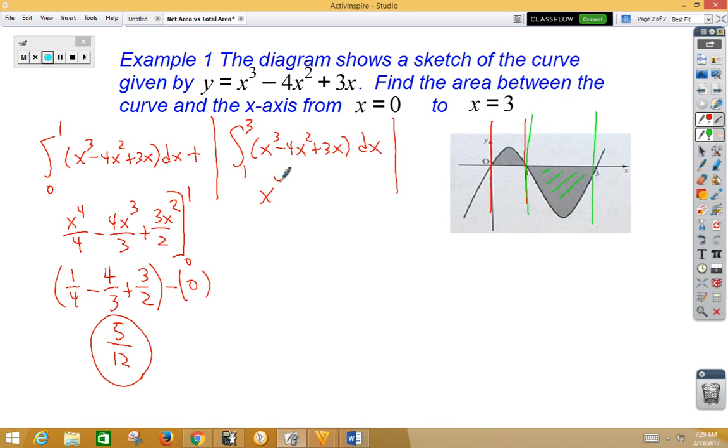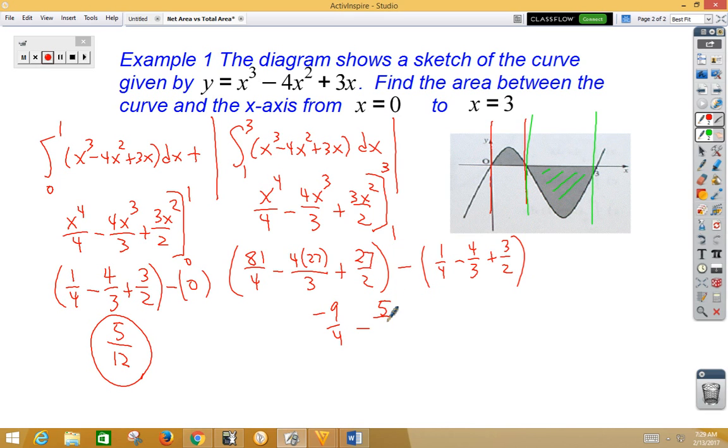If we go ahead and integrate on this side, we get x to the 4th over 4 minus 4x cubed over 3 plus 3x squared over 2 from 1 to 3. If we plug in our 3, we get 81 fourths minus 4 times 27 over 3 plus 27 over 2 minus our 1 fourth minus our 4 thirds plus our 3 halves. Combining all this together, we're going to get negative 9 fourths minus 5 twelfths, which would give us negative 8 thirds.